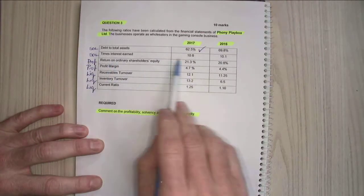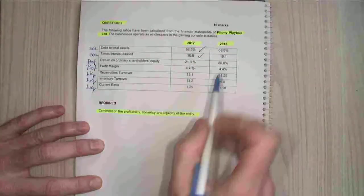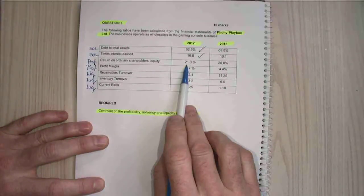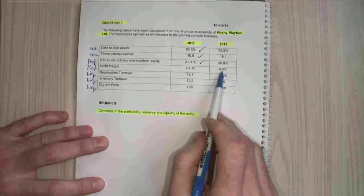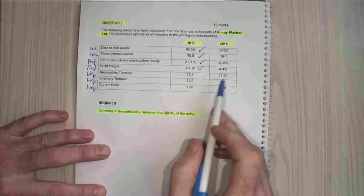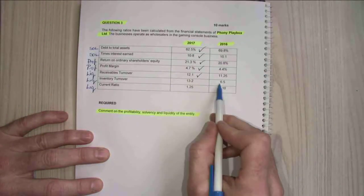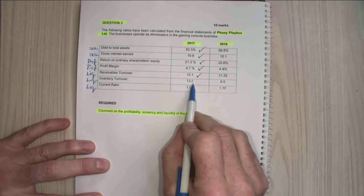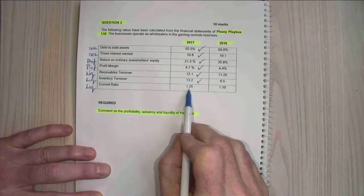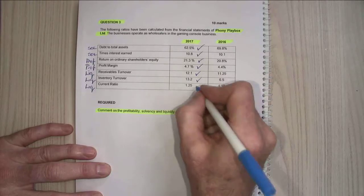17. My times interest earned has gone from 10.1 to 10.8. Which year is better? 17. My return on ordinary shareholders has gone from 20.8 to 21.3. 17. My profit margin has gone from 4.4 up to 4.7. 17. My receivables turnover has gone from 11.25 up to 12.1. 17. My inventory turnover has gone from 6.5 to 13.2. 17. And my current ratio has gone from 1.10 up to 1.25. 17.